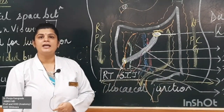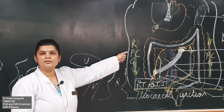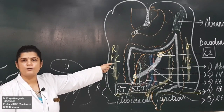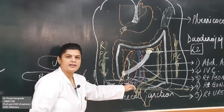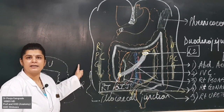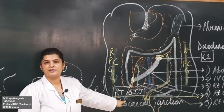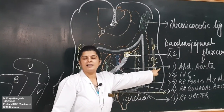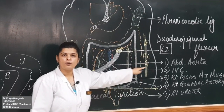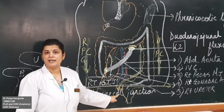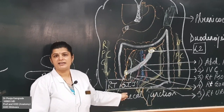With this, we finish the infra-colic compartment. To summarize: the infra-colic compartment consists of paracolic gutters. It continues down into the pelvic cavity below. The right lateral paracolic gutter is freely open to both the supra-colic and pelvic cavity. The left lateral and left medial paracolic gutters are both continuous with the pelvic cavity. Only the right medial paracolic gutter is not directly continuous with the pelvic cavity.